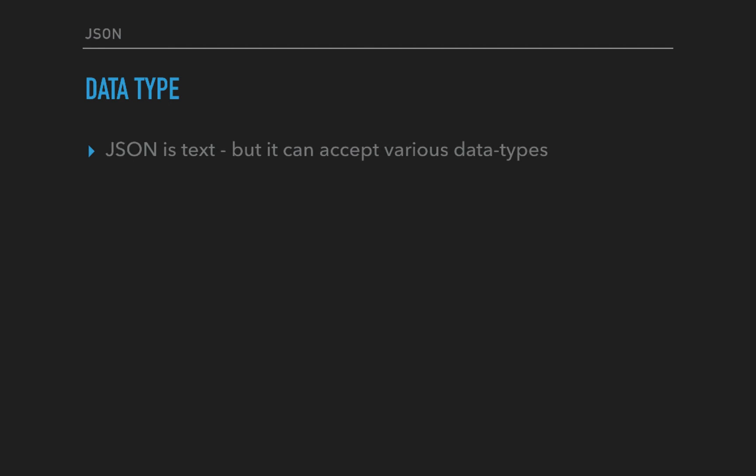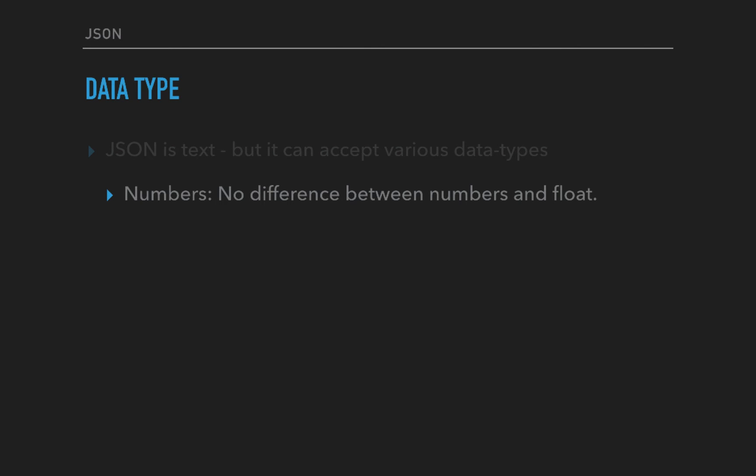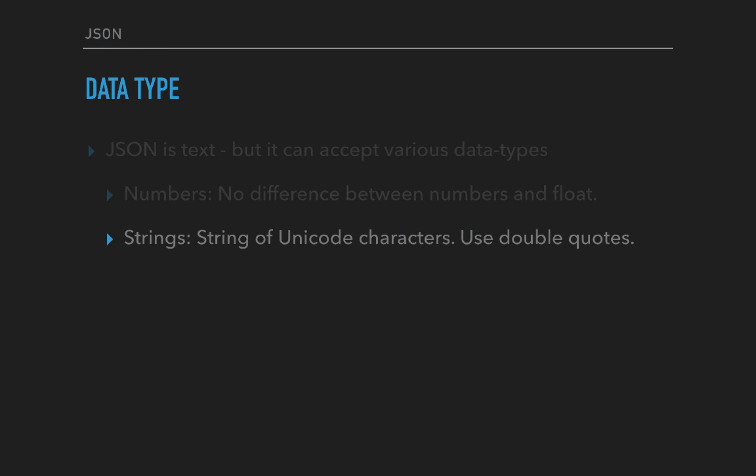Let's now see the data types. JSON is basically text, but it can accept various data types. The first one is numbers, which is no different from what we expect in JavaScript. The only thing is that numbers and float values are the same in JSON. So for languages like Java, which might have integers as well as floats, it may not be necessary that JSON will hold values as int or float - it will only hold it as a number.